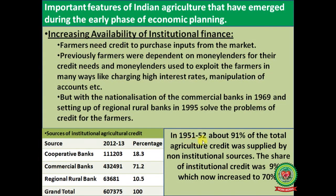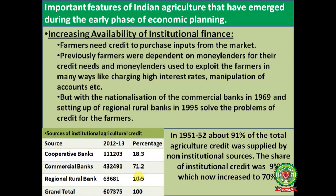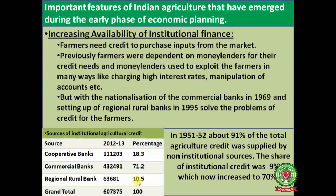In 1951–52, about 91 percent of total agriculture credit was supplied by non-institutional sources; the share of institutional credit was only 9 percent, which has now increased to 70 percent. Sources of institutional agriculture credit in 2012–13: cooperative banks 18.3 percent, commercial banks 71.2 percent, and Regional Rural Banks 10.5 percent.